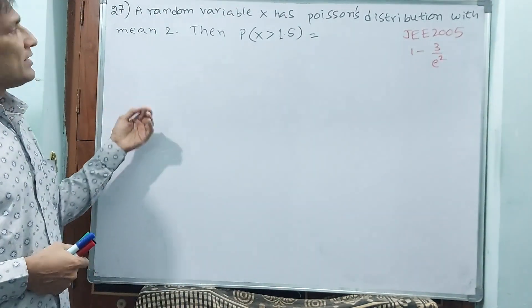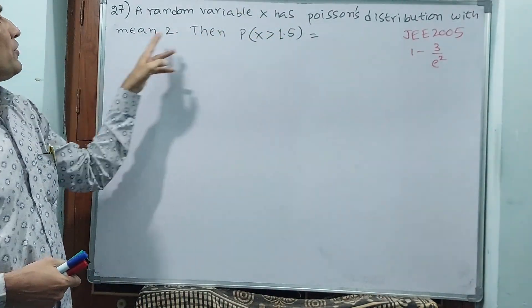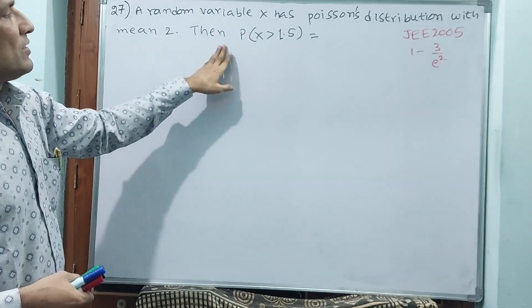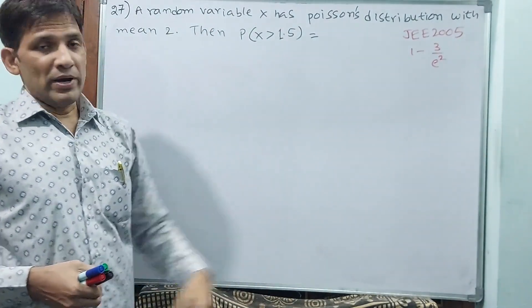This formula I am going to write. A random variable x has Poisson's distribution with mean 2. Then, probability of x is greater than 1.5 is equal to how much?